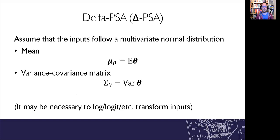We assume that those inputs follow a multivariate normal distribution that has a mean of mu theta and a variance covariance matrix of sigma theta. It might be necessary for us to transform some of these so that that multivariate normal assumption is reasonable, for example with log or logit transformations.